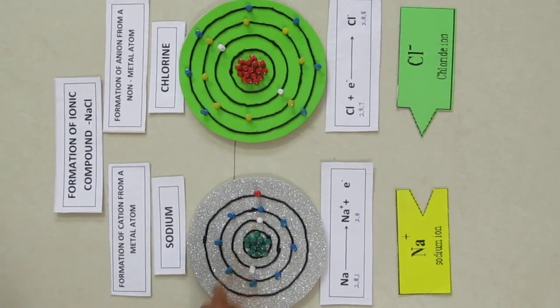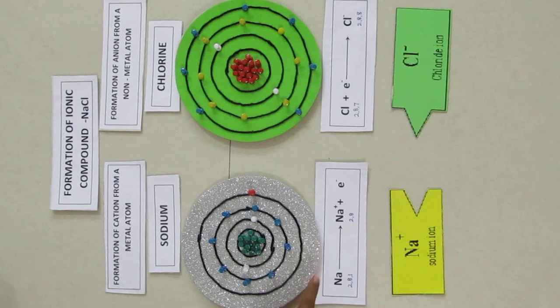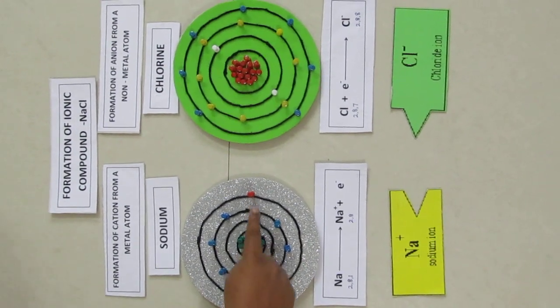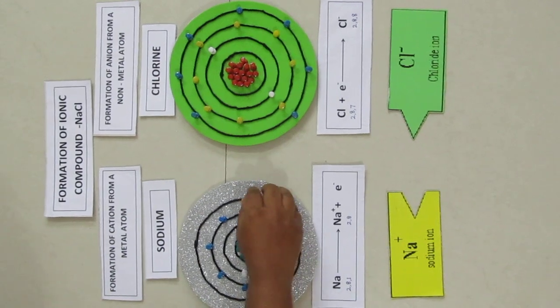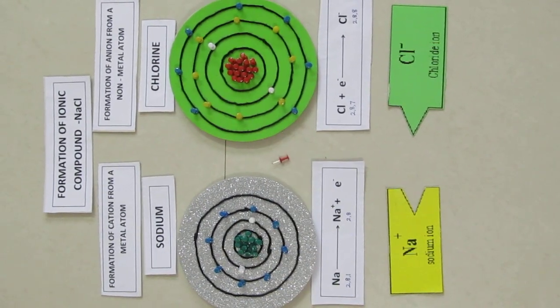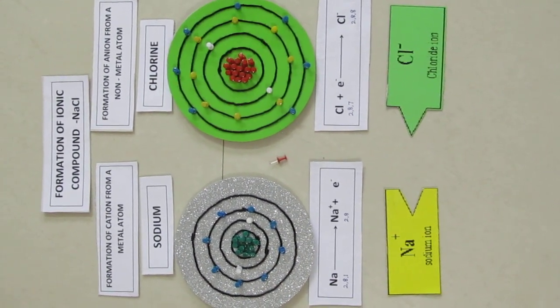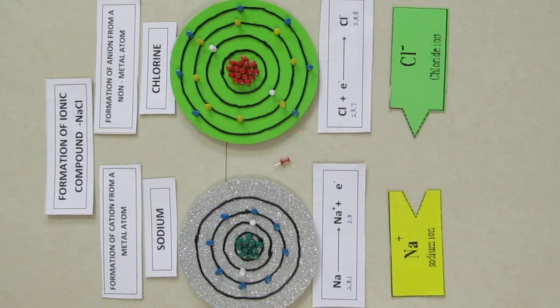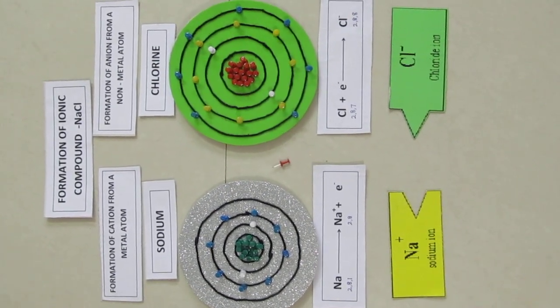Sodium has two electrons in its K shell, eight electrons in its L shell and one electron in its M shell. If sodium loses its one electron from the M shell, then L shell now becomes outermost shell that has eight electrons and it attains stable octet configuration.